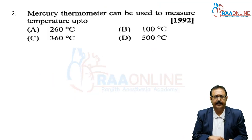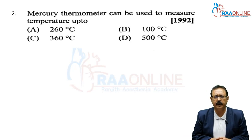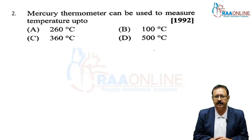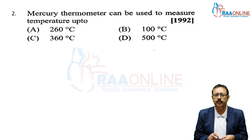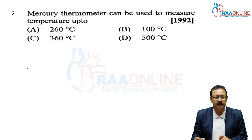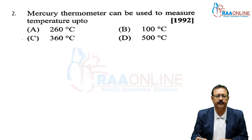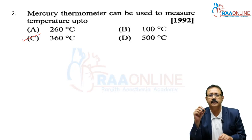The second problem is a theoretical question from 1992: up to what temperature can a mercury thermometer measure? Generally, we can measure up to a temperature of 360 degrees Celsius using a mercury thermometer. So we are going with option C.